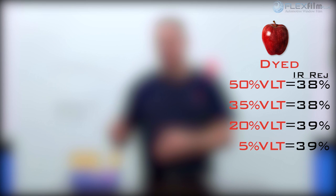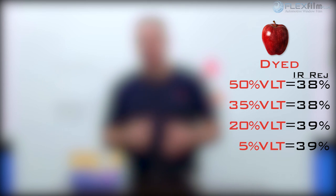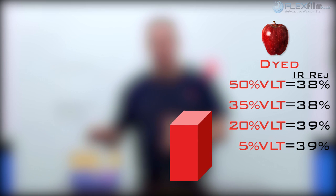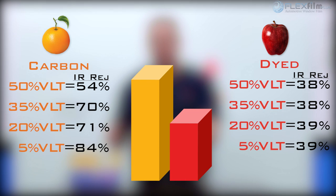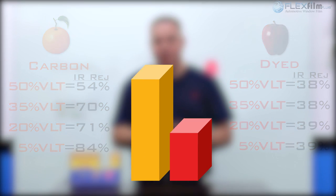Now we can clearly see there's a difference between an apple and an orange. As we saw in the demonstration, the apple did not change IR rejection — it didn't matter how light or how dark, it was the same on every shade. In the carbon ceramic, which is the orange, we saw a distinctive difference: the darker we went, the more IR we could reject. Carbon rejects infrared radiation, so the more you see in the film, the more IR rejection you're going to get the darker you go. That's the difference.